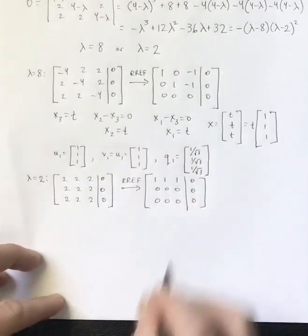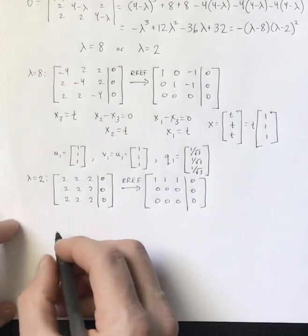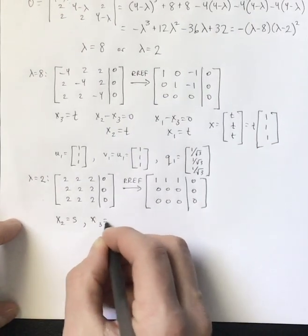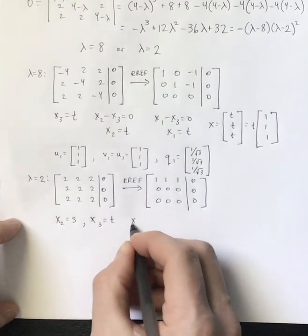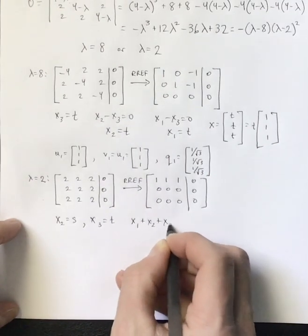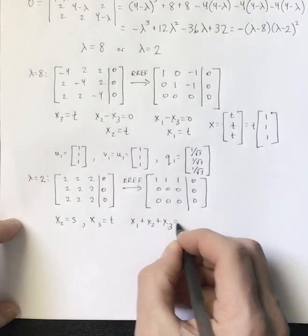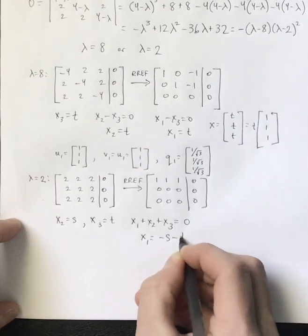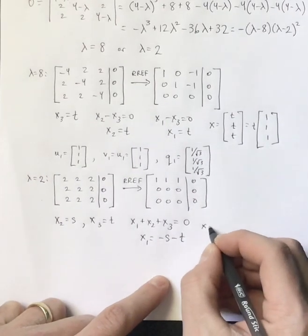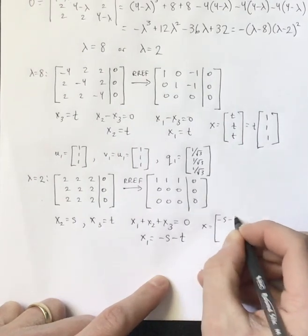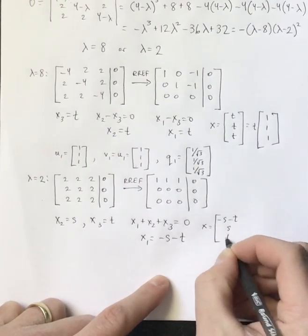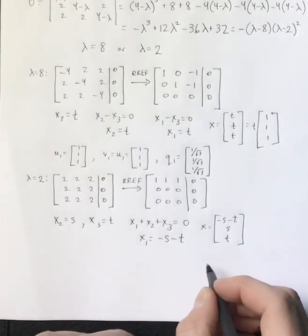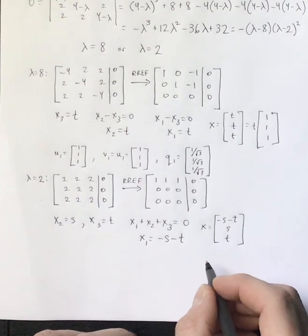And so you can see we actually have two free variables this time. I'll say X2 is S and X3 is T. Then that equation becomes X1 plus X2 plus X3 equals 0. In which case, X1 is negative S minus T. So the vector X would be negative S minus T, S, T.